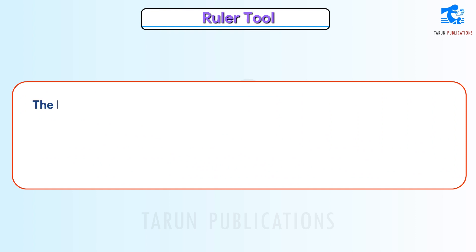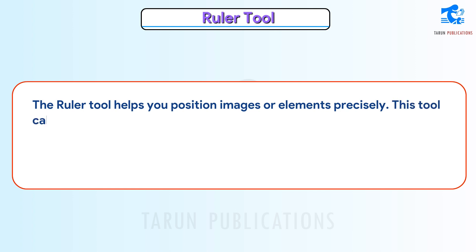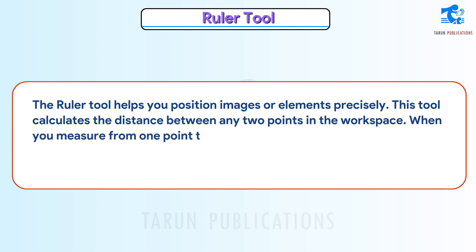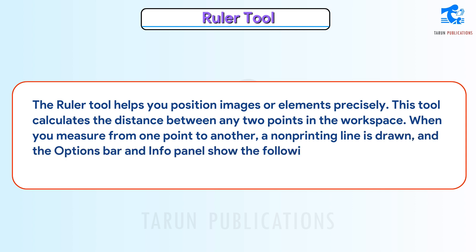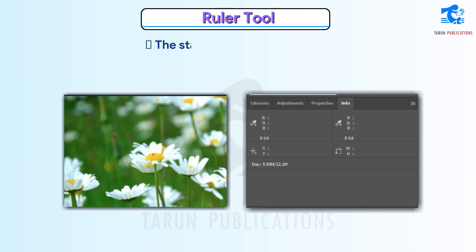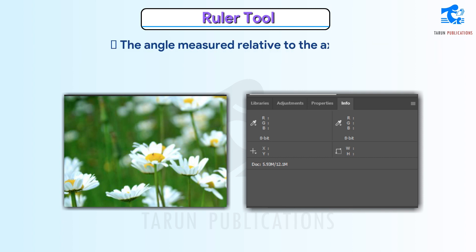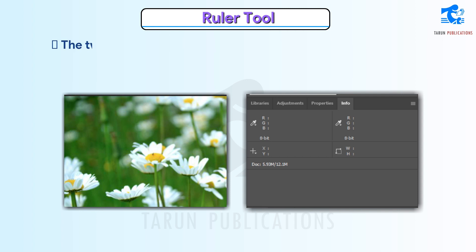Ruler Tool. The Ruler Tool helps you position images or elements precisely. This tool calculates the distance between any two points in the workspace. When you measure from one point to another, a non-printing line is drawn and the Options bar and Info panel show the following information: the starting location X and Y, the horizontal W and vertical H distances traveled from the X and Y axis, the angle measured relative to the axis A, the total length traveled L1, and the two lengths L1 and L2 when using a protractor.